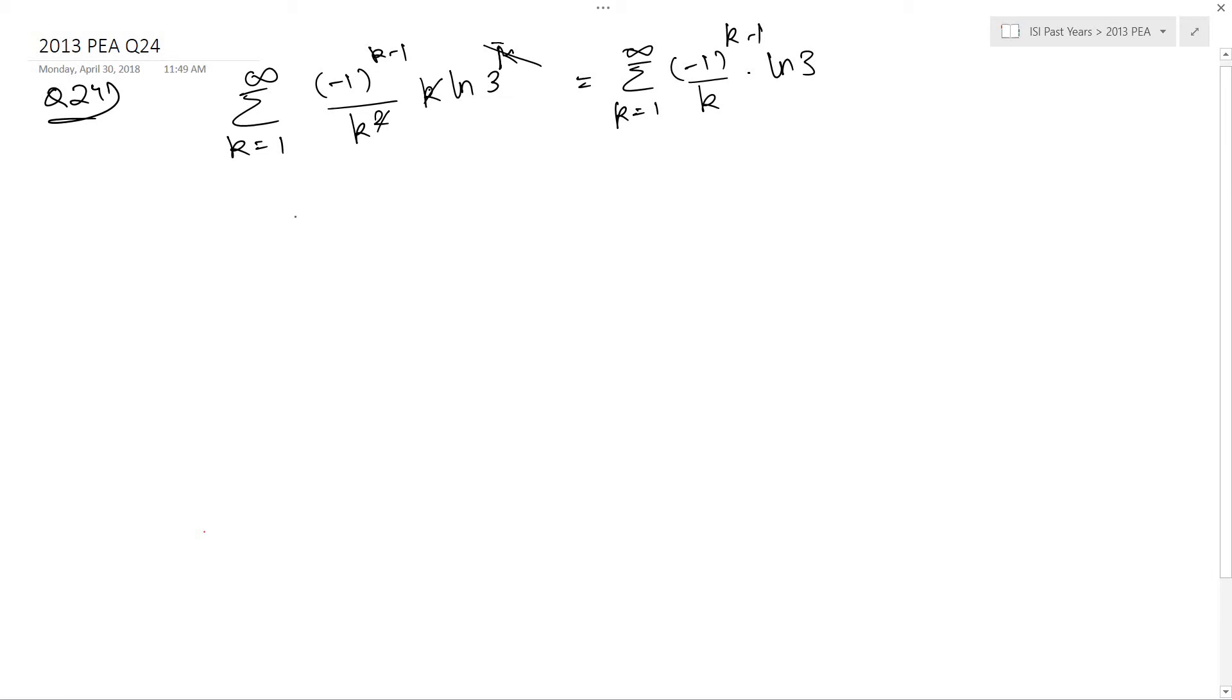You can take the ln 3 out of the equation. So this becomes ln 3 into 1 minus 1 by 2 plus 1 by 3 minus 1 by 4 plus 1 by 5 and so on.